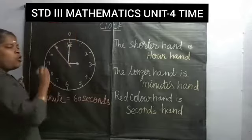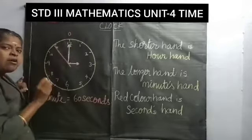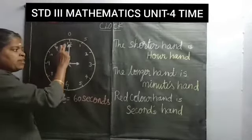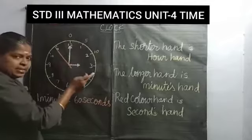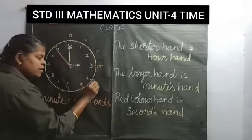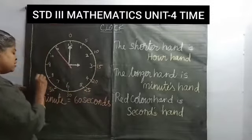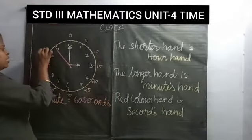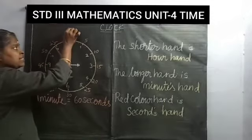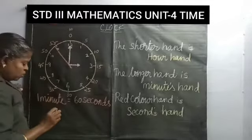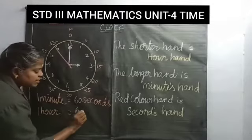You can consider 12 as 0 minutes. In between 12 and 1 there are 5 minutes. How many minutes are there between 12 and 2? 10 minutes. How many minutes between 12 and 3? 15 minutes. So 20 minutes, 25 minutes, 30 minutes, 35 minutes, 40, 45, 50, 55 — and if they reach 12, that is 60 minutes. So 1 hour is equal to how many minutes? 1 hour is equal to 60 minutes.